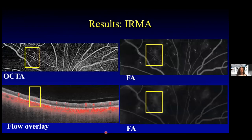Here's another example where an abnormal blood vessel was identified on OCT-A. On the corresponding structural OCT with flow overlay, this area did not extend through the ILM — it's intraretinal flow. Interestingly, on the fluorescein angiogram this area does have a little bit of late leakage.